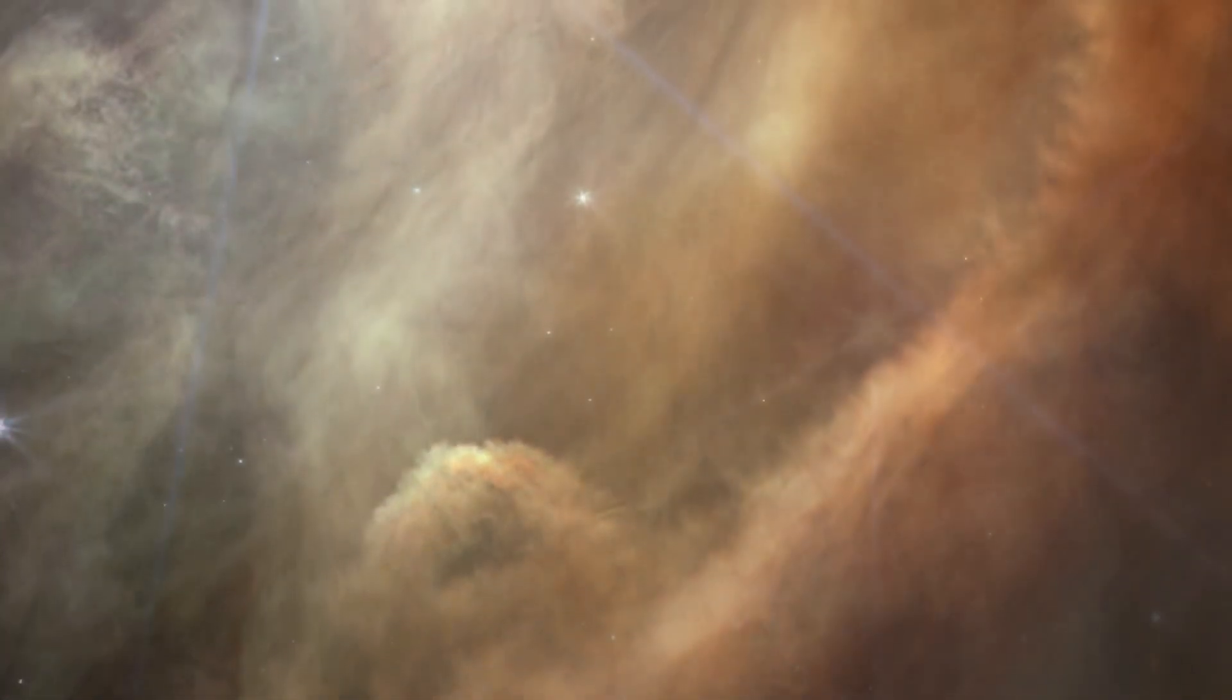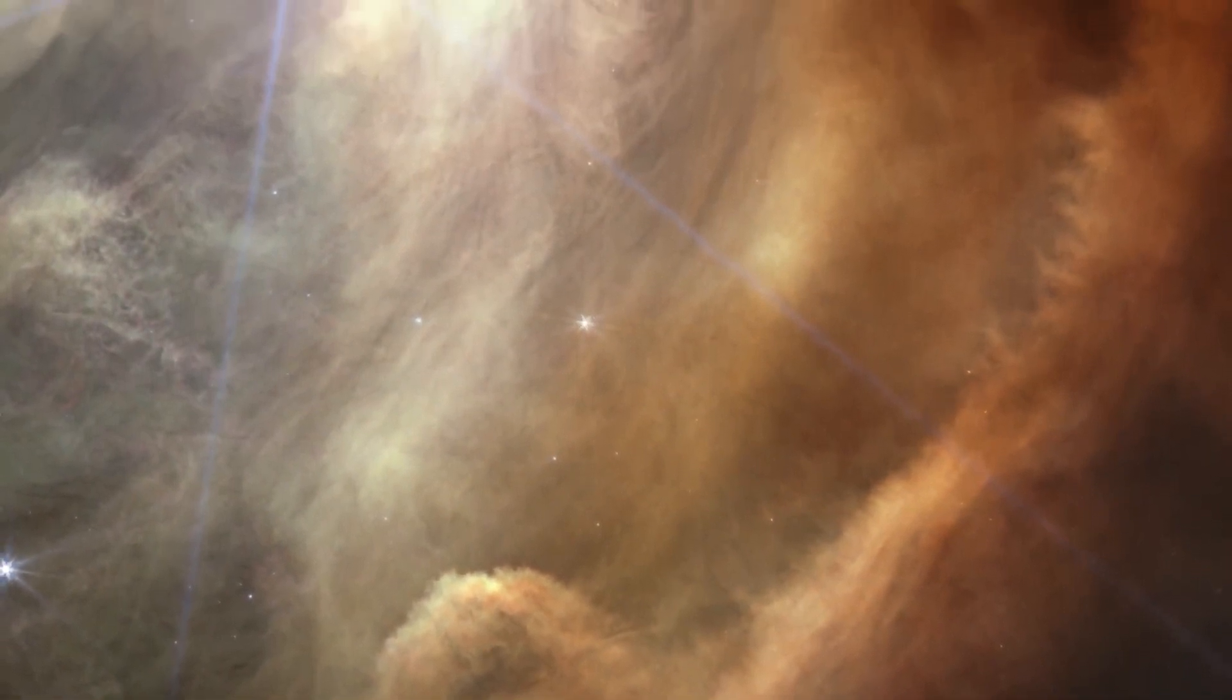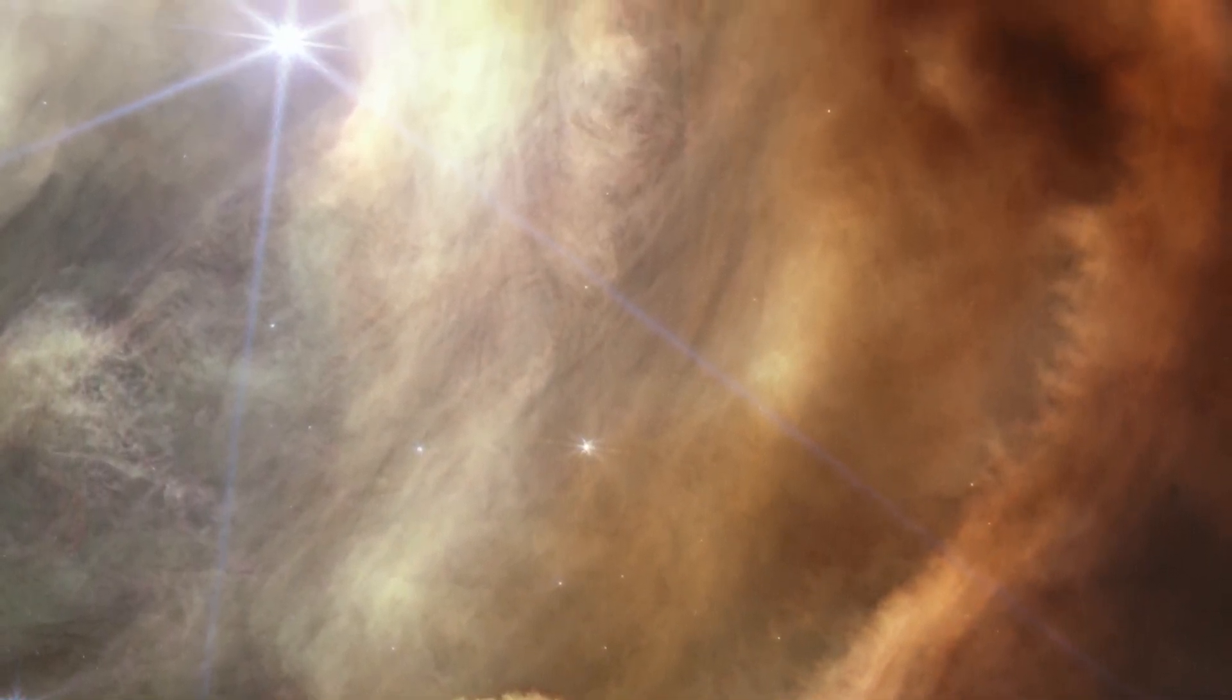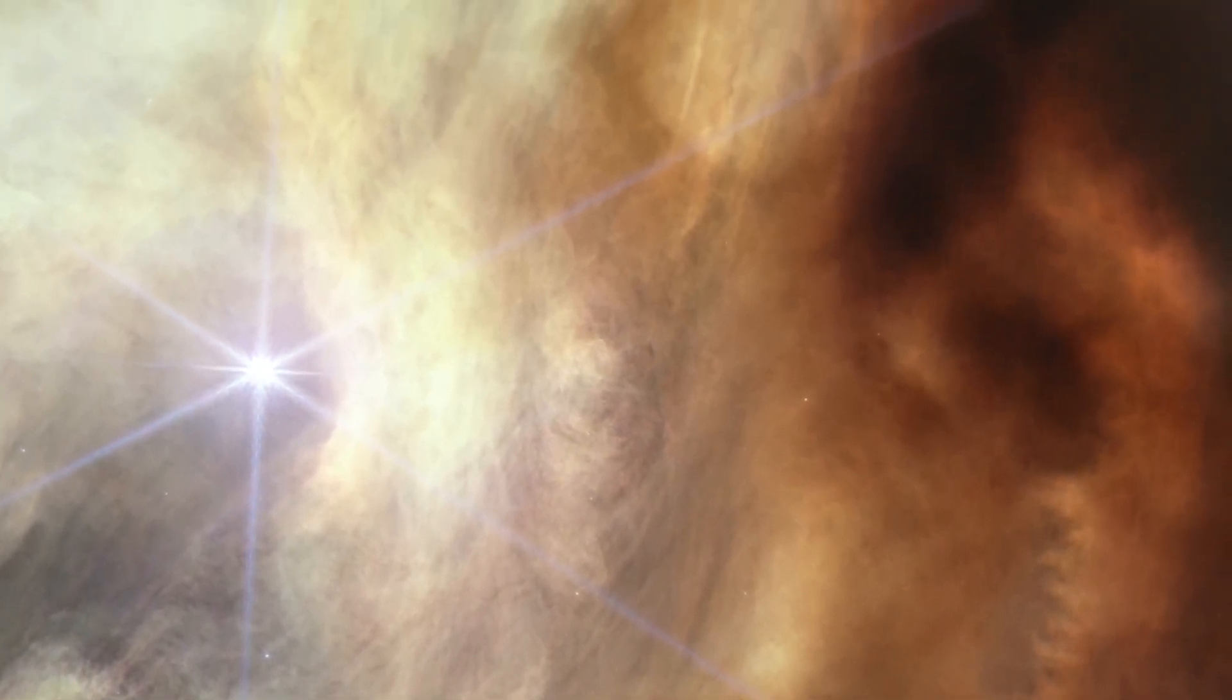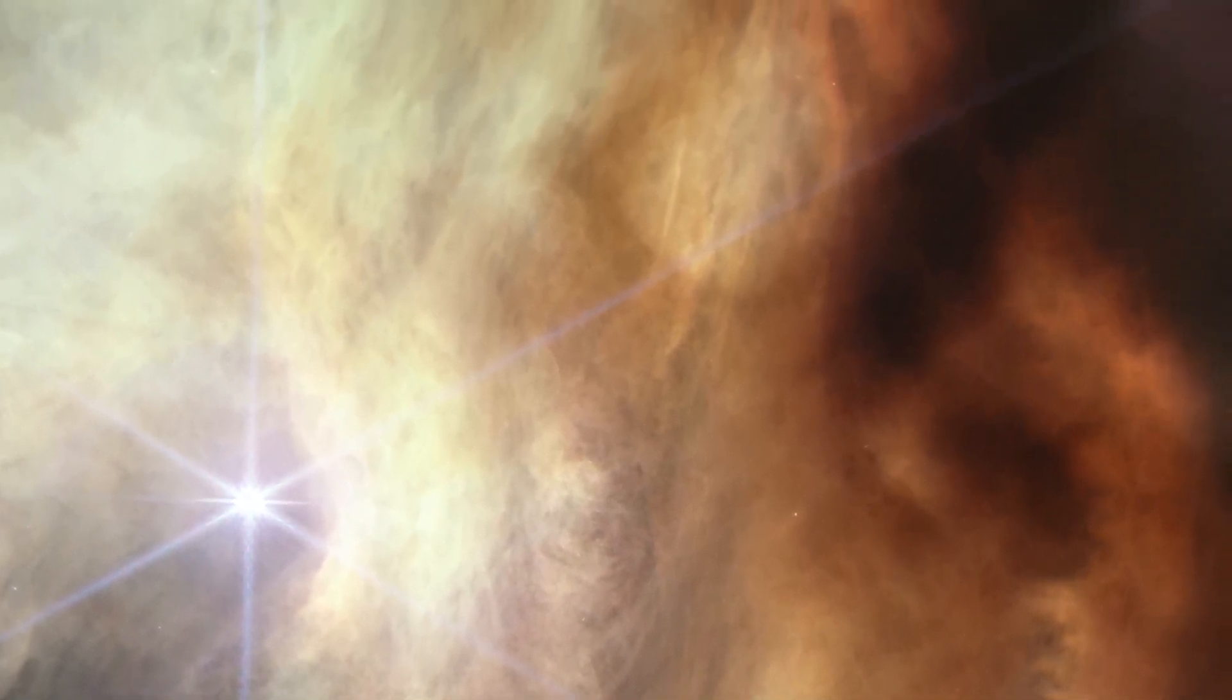The yellow-orange color comes from tiny sooty grains that astronomers call polycyclic aromatic hydrocarbons. Streamers of gas and dust form structures and textures unlike anything we have seen before.